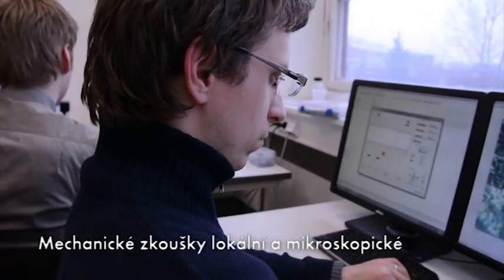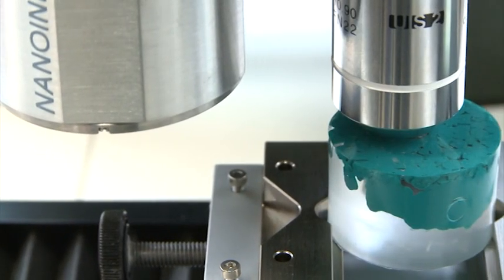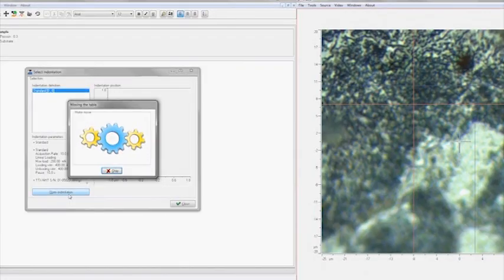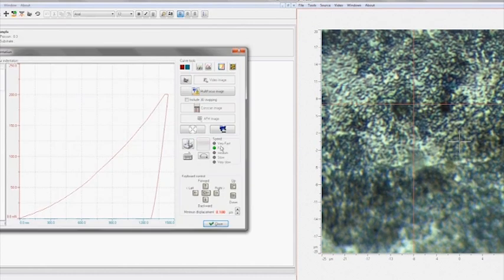Laboratoře lokálních mechanických vlastností umožňují měřit tvrdost materiálu škálou makroskopických metod, mikrotvrdostí i nanoindentací, která také umožňuje měřit modul pružnosti materiálu.